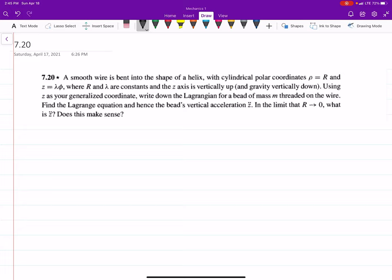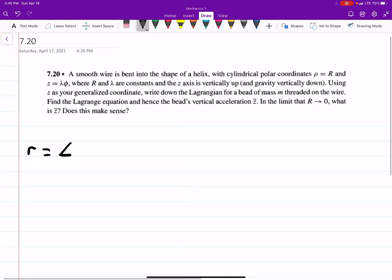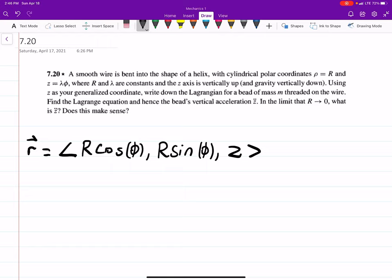So to begin, this is obviously in cylindrical coordinates because the problem states it explicitly. So for cylindrical coordinates, we can say the position vector r is equal to R cosine phi, R sine phi, z. And we do that because this rho was our R.